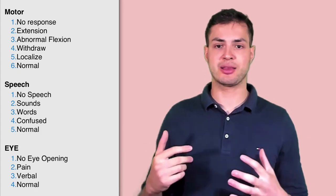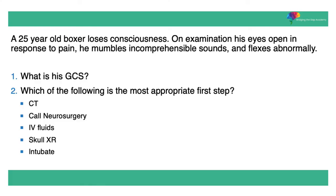Here's an example: a 24-year-old boxer gets punched in the head, loses consciousness, wakes up, then loses consciousness again. On assessment, painful stimuli produce incomprehensible sounds, he opens his eyes to pain, and he abnormally flexes. His GCS is: eyes 2 (opens to pain), verbal 2 (incomprehensible sounds), motor 3 (abnormal flexion) — giving a total score of 7. This patient has an extradural hemorrhage from a middle meningeal artery bleed. With a GCS of 7, the first step is to intubate the patient to protect the airway.